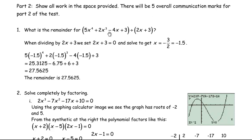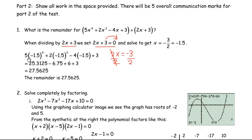Number one asks for the remainder when a quartic polynomial is divided by 2x plus 3. I'll use the remainder theorem. Set 2x plus 3 equal to zero: bring the 3 over to get 2x equals negative 3, then divide by 2 to get x equals negative 3 halves, or negative 1.5. Substitute negative 1.5 in place of x in the polynomial and evaluate to get 27.5625, which is the remainder.